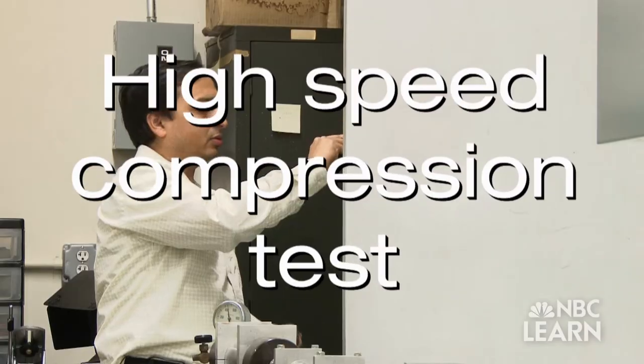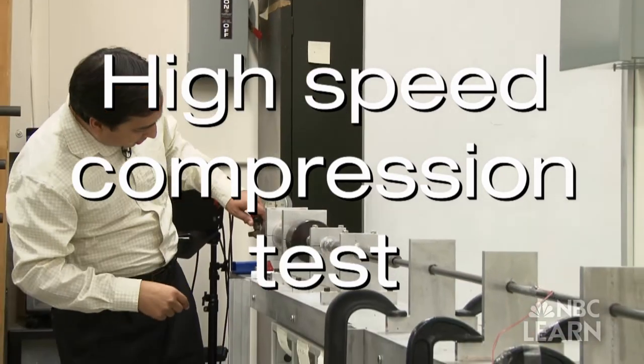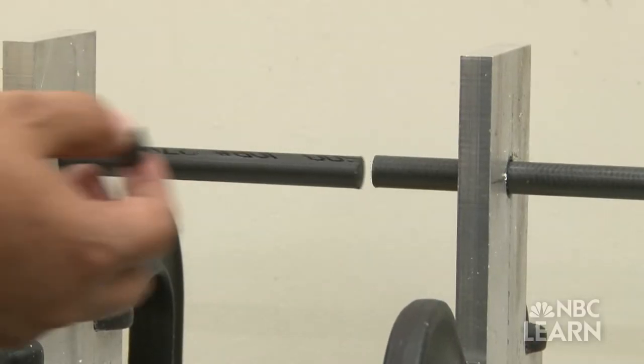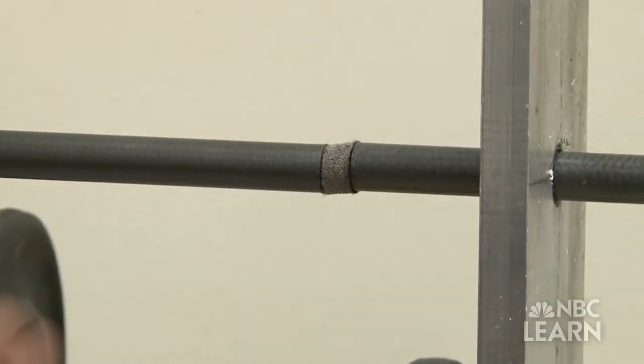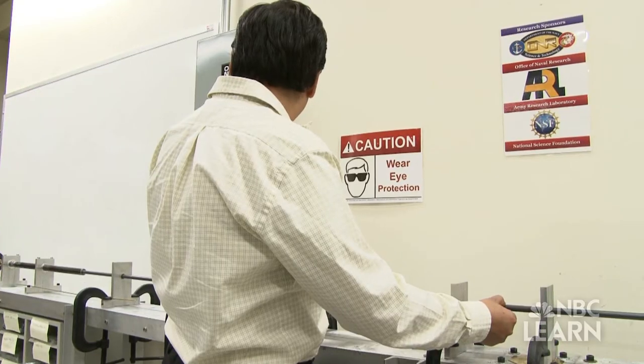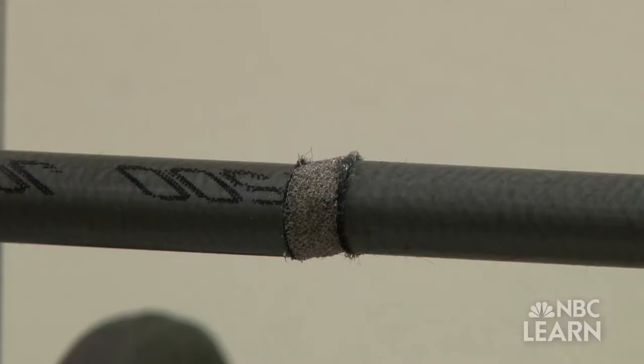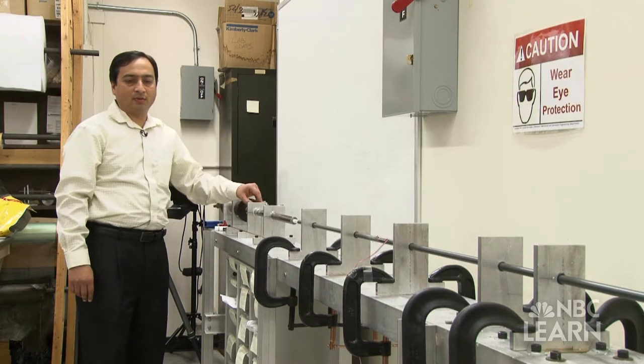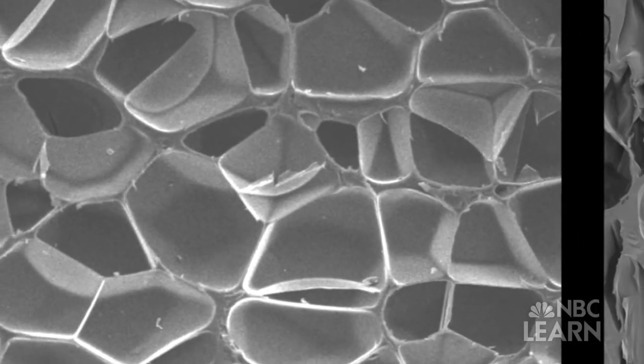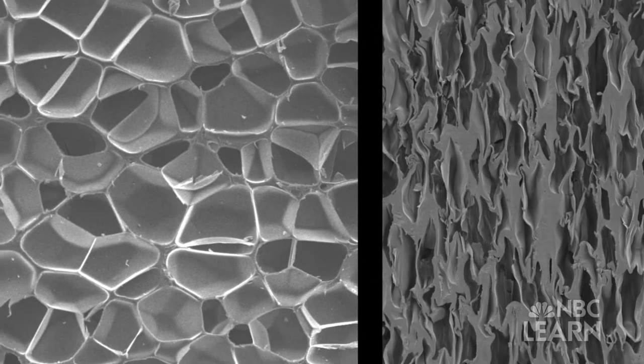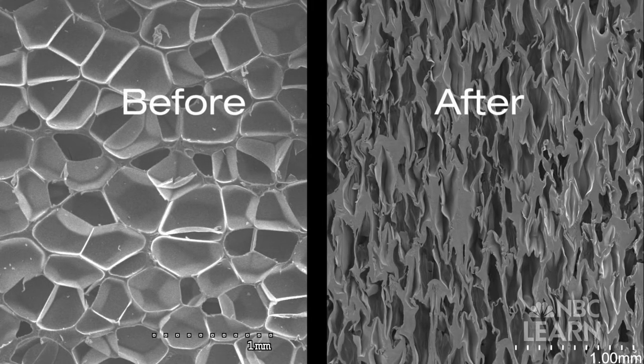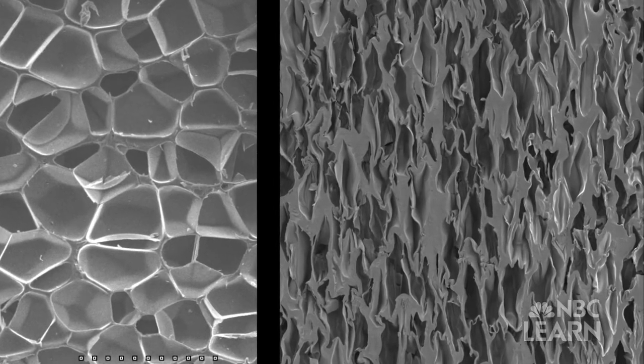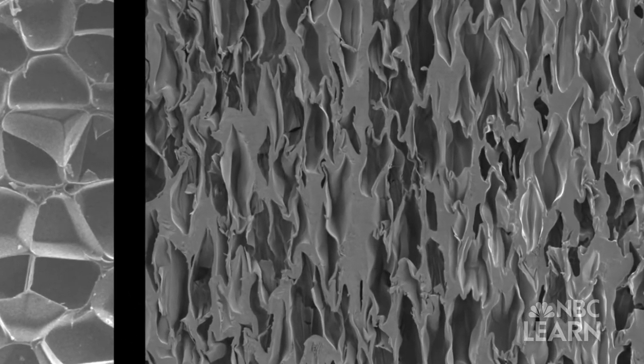A high-speed compression test is designed to simulate conditions which are similar to a biker crashing at 80 kilometers per hour. Gupta uses a compression gun to fire a plastic rod into the foam. The foam is then examined using a scanning electron microscope to see if there is any permanent damage caused by the impact. And see, this is now crushed under high-speed compression.